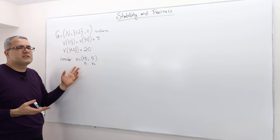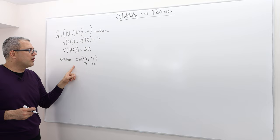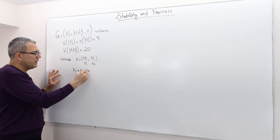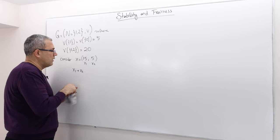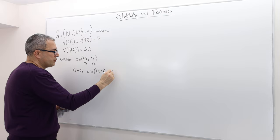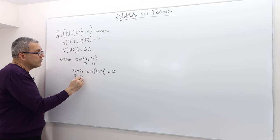It is, however, a stable outcome, right? I mean, how do we know that? Well, simple. x1 plus x2 is exactly equal to the worth of the grand coalition, 1, 2, all right? Which is 20, and what else? Well, x1 is greater than or equal to 5. x2 is also greater than or equal to 5.